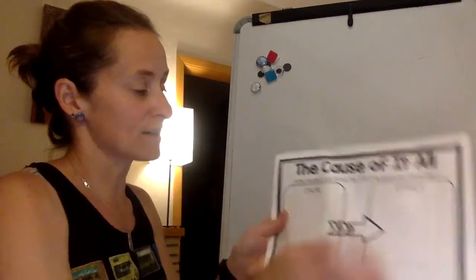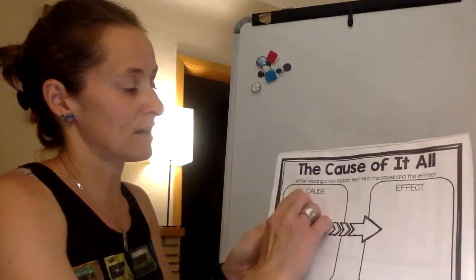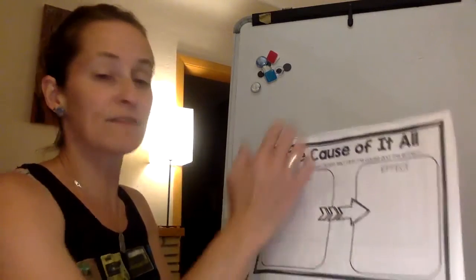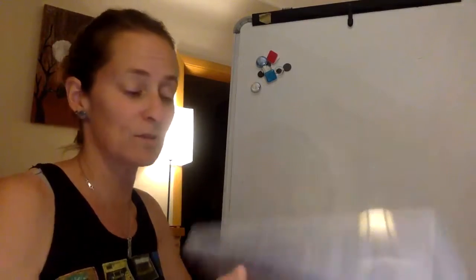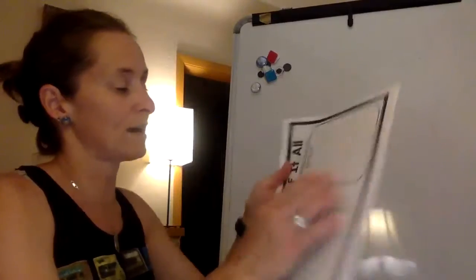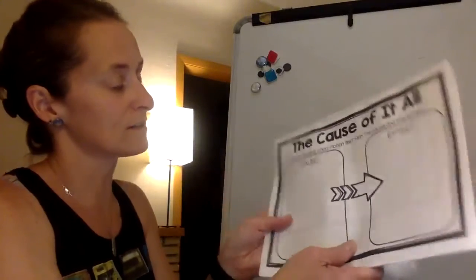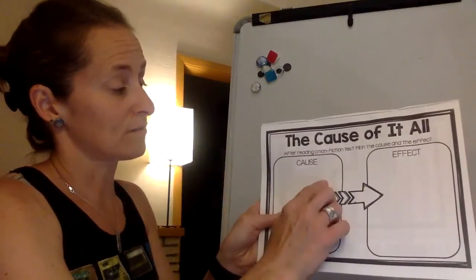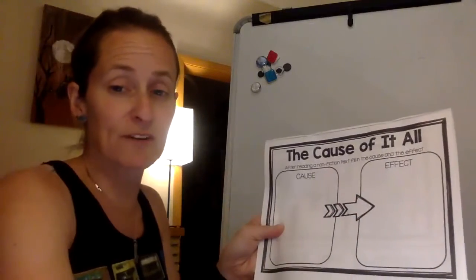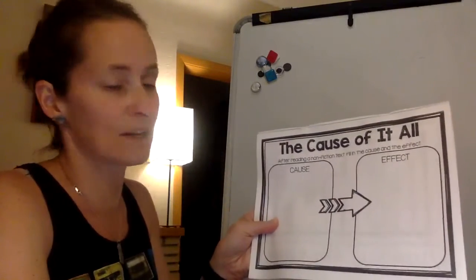So the cause on this side, boys and girls, definitely is going to be, so we've got flooding. What is the effect that flooding can have on communities and the environment? So when you're going back, there's going to be more than one. So I would say for your cause, the flooding, and then your effect. I want you to add maybe two to three different effects of what flooding can do to the environment.